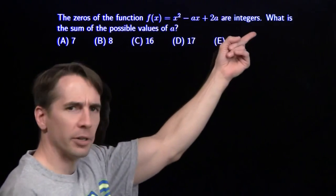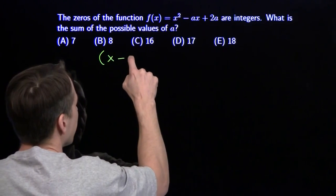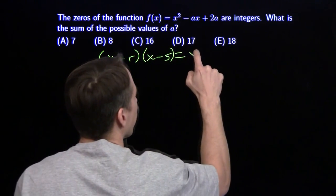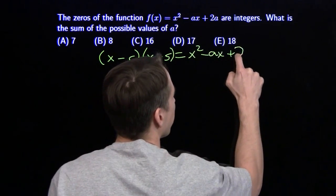Now we know something about these zeros - they're integers. So we can write (x - r)(x - s), where r and s are our zeros, equals x² - ax + 2a.